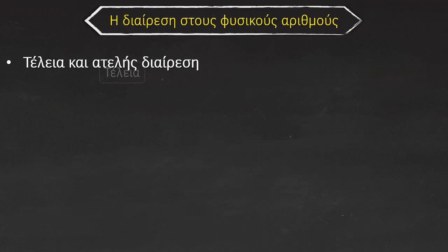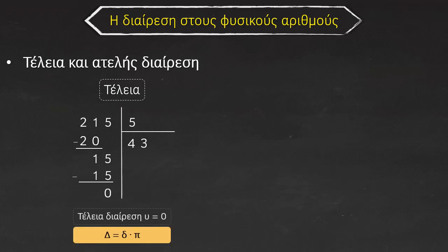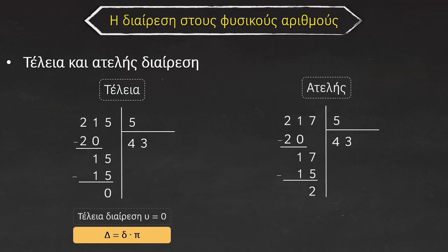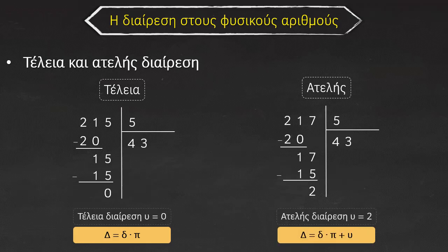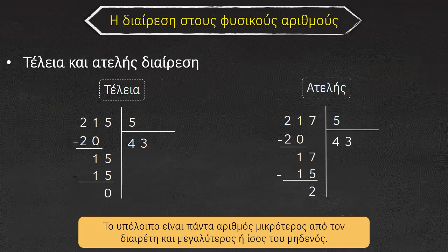Τέλεια και ατελής διαίρεση. Τέλεια διαίρεση λέγεται η διαίρεση στην οποία το υπόλοιπο είναι 0. Στο παράδειγμά μας έχουμε το 215, το διαιρούμε με το 5, το αποτέλεσμα είναι 43 στο πηλίκο και το υπόλοιπο είναι 0. Όταν το υπόλοιπο δεν είναι 0, η διαίρεση λέγεται ατελής. Στο παράδειγμά μας το 217 διαιρούμε με το 5, το αποτέλεσμα στο πηλίκο είναι 43 και έχω υπόλοιπο 2. Να θυμάσαι πως το υπόλοιπο είναι πάντα αριθμός μικρότερος από το διαιρέτη και μεγαλύτερος ή ίσος του 0.